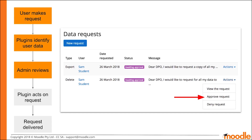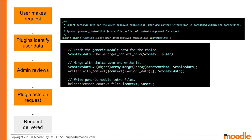Although the GDPR does provide the right to be forgotten, this right is not absolute. The GDPR does allow for some data to be held for longer, even after a user has requested to be forgotten. After the data protection officer has approved the user request, the Privacy API will call your plugin again, this time providing an approved context list.